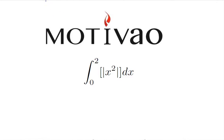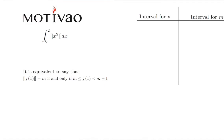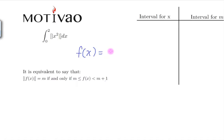This is very similar to the square root one but on the opposite side. Let's go back to the definition: the greatest integer function of f(x) equals m if and only if m is less than or equal to f(x) which is less than m plus 1, and here f(x) is equal to x squared.